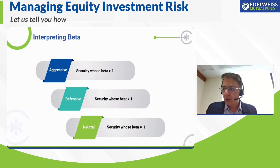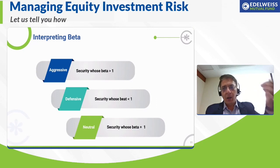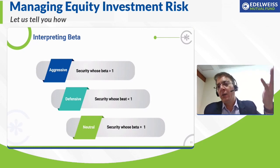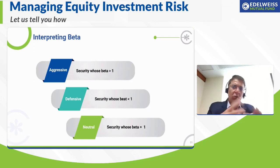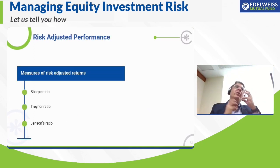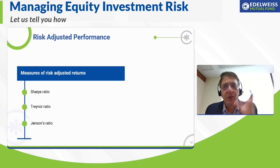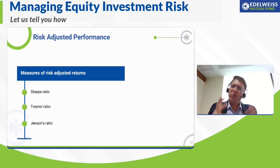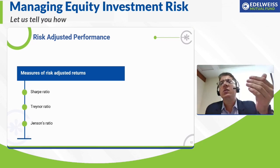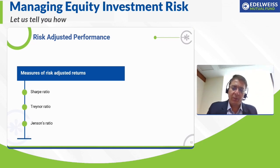To summarise the three risk measurement terms: for variance and standard deviation, higher means greater dispersion from expected returns and hence greater risk — so choose the lower one. For beta, a low beta is the more generic strategy and easier to manage. Now moving on, we'll look at how to measure risk-adjusted returns using three terms: Sharpe ratio, Treynor ratio, and Jensen's alpha.